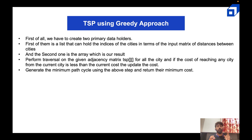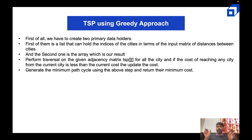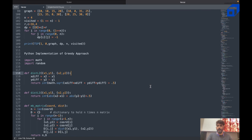Let's look into TSP using the greedy approach. We create two primary holders: the first holds the indices of the cities from the input matrix, the second is the result array. We have an adjacency matrix with the cost of travel. Once the newest cost is calculated, both costs are compared — if the new cost is less than the old cost it gets updated, otherwise the calculation moves on and the cost remains the same. This is exactly what the greedy approach does.